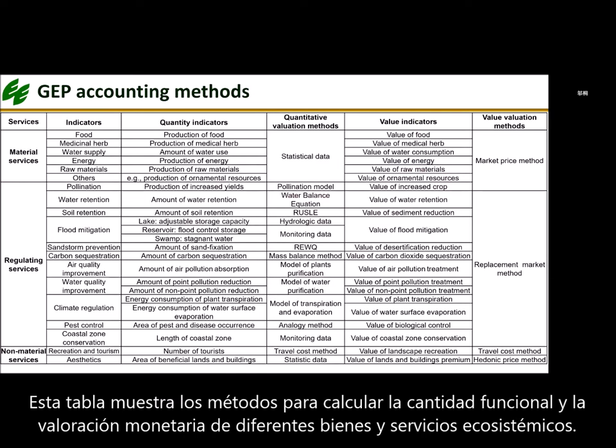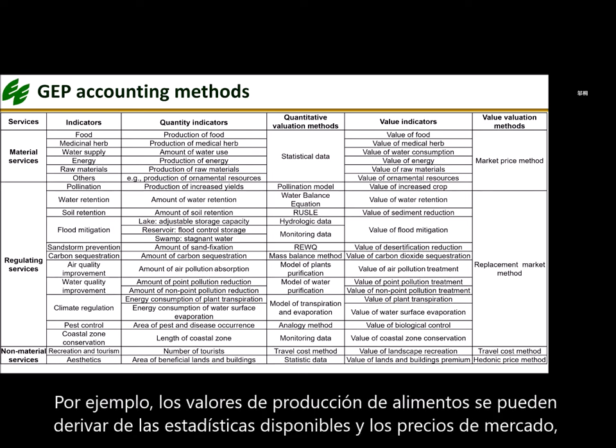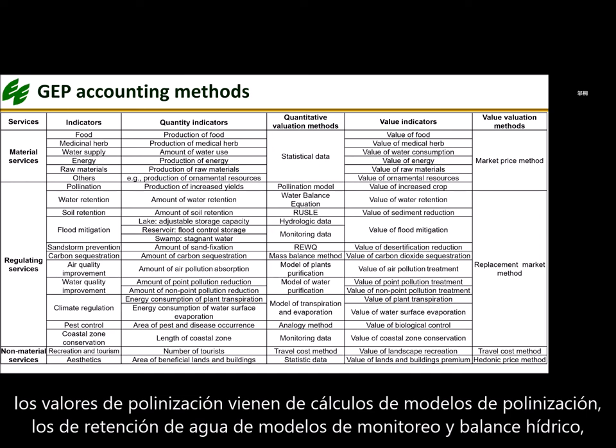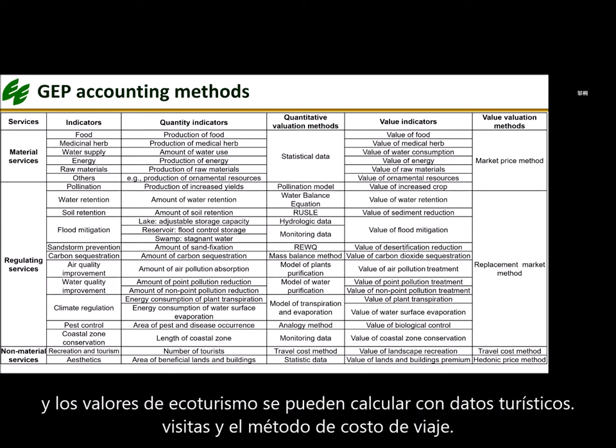This table shows the specific methods used to calculate the functional quantity and monetary valuation of different ecosystem goods and services. For instance, food production values can be derived from available statistics and market prices. Pollination values come from pollination model calculations. Water retention values are based on hydrological monitoring and water balance models. And ecotourism values can be calculated on the basis of tourist visits and the travel cost method.